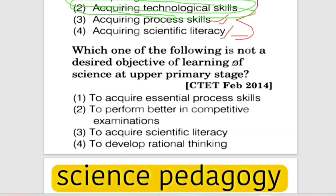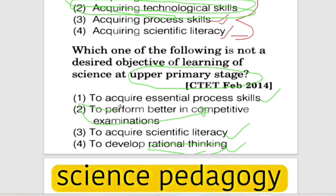Which one of the following is NOT a desired objective? The objectives include: to acquire essential process skills, to develop scientific literature, to develop rational thinking, and to develop science teaching. Developing scientific literature and research — this is the objective.